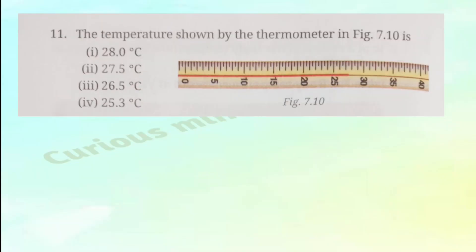Eleventh question: The temperature shown by the thermometer in figure 7.10 is — option one: 28°C, option two: 27.5°C, option three: 26.5°C, option four: 25.3°C. The correct answer is option two: 27.5 degree Celsius.